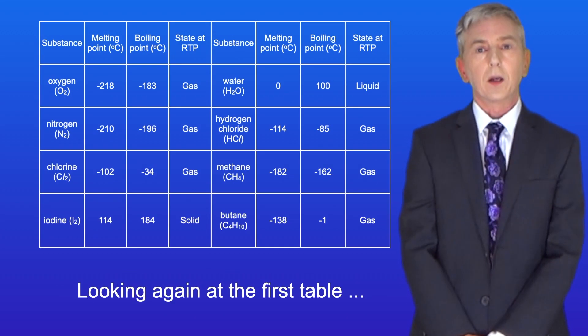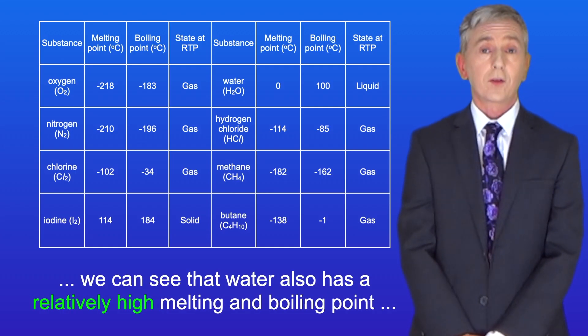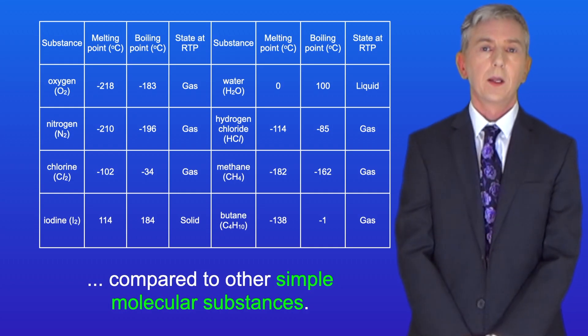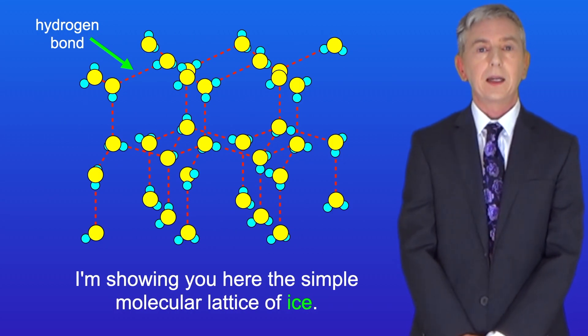Looking again at the first table we can see that water also has a relatively high melting and boiling point compared to other simple molecular substances. I'm showing you here the simple molecular lattice of ice.